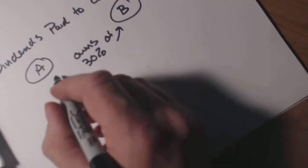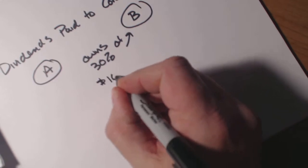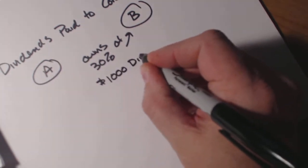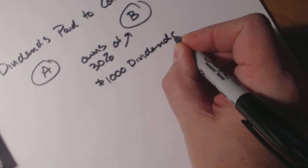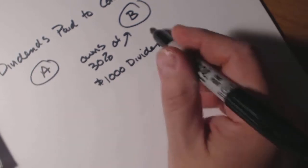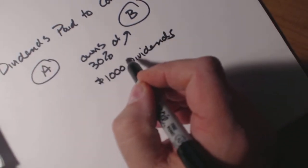So the problem is that if Company A owns Company B and Company B pays, say, $1,000 in dividends, in theory they should pay the tax on the $1,000 in dividends.